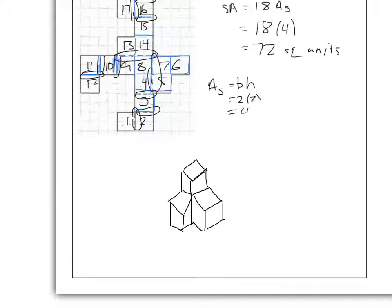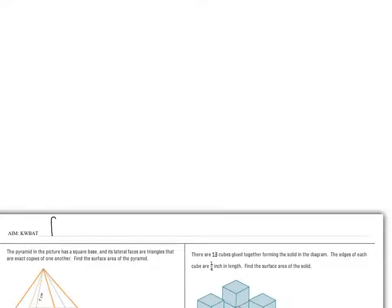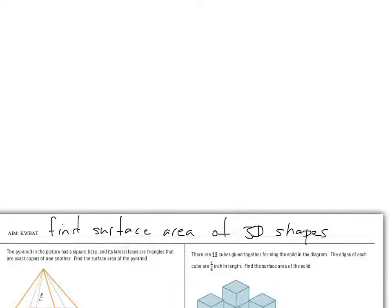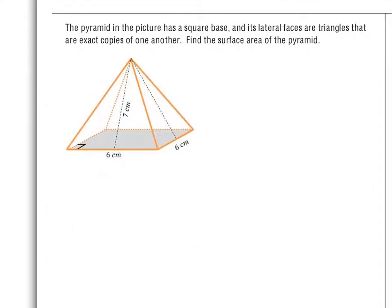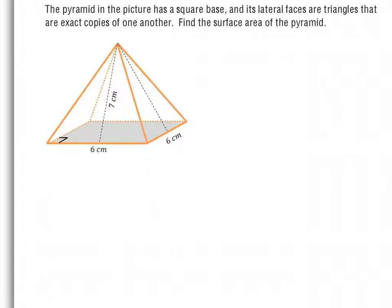Let's flip over and look at our aim for today. Today's aim: students will be able to find the surface area of 3D shapes. As a reminder, pause really quickly before we move on and identify with your team what it means when we're talking about surface area. Just redefine for yourself what surface area is.